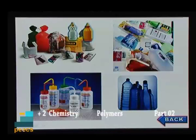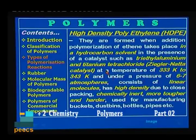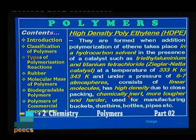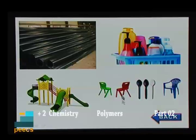LDP is formed by free radical addition and hydrogen abstraction, and this polymer has a highly branched structure. It is chemically inert and is used in the insulation of electricity-carrying wires and the manufacture of squeeze bottles, toys, and flexible pipes. High density polyethylene is formed when ethylene undergoes addition in a hydrocarbon solvent in the presence of a Ziegler-Natta catalyst (triethyl aluminum and titanium tetrachloride) at 333 K to 343 K and under a pressure of 6 to 7 atmospheres. It consists of linear molecules, has high density due to close packing, is more tough and hard, and is used for manufacturing buckets, dustbins, bottles, and pipes.